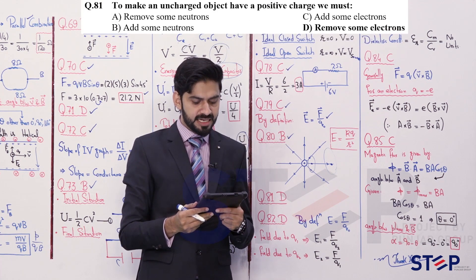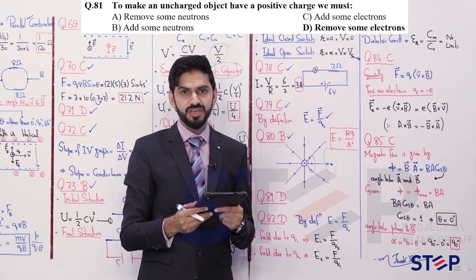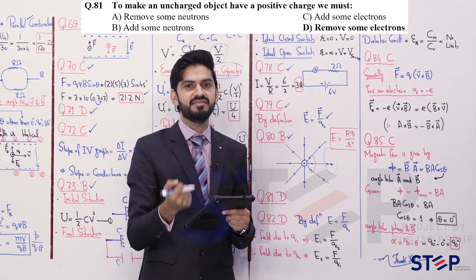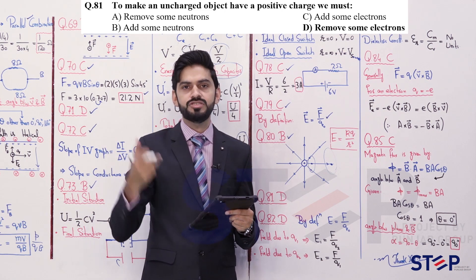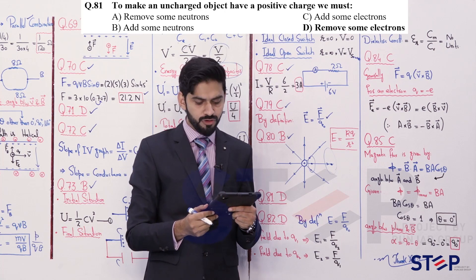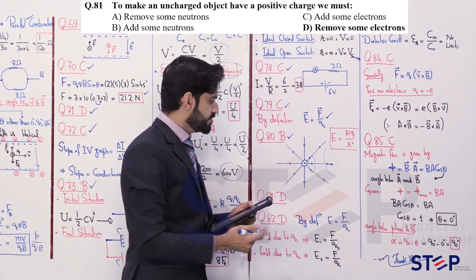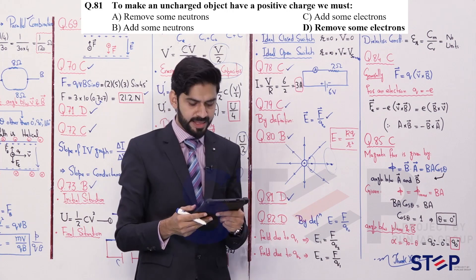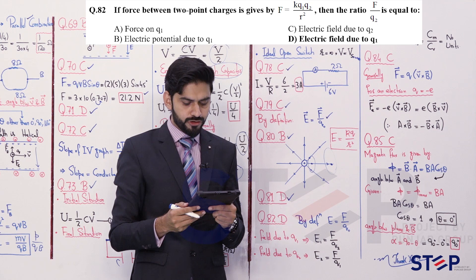Question 81: To make an uncharged object have a positive charge, we must remove electrons from it. Simple information-based question. Answer is option D.